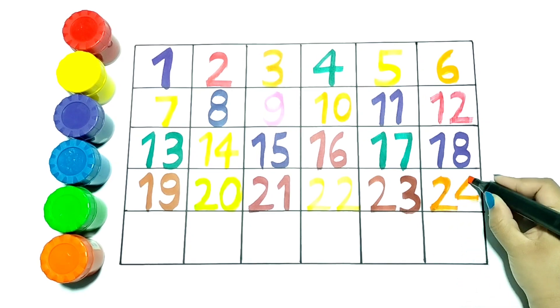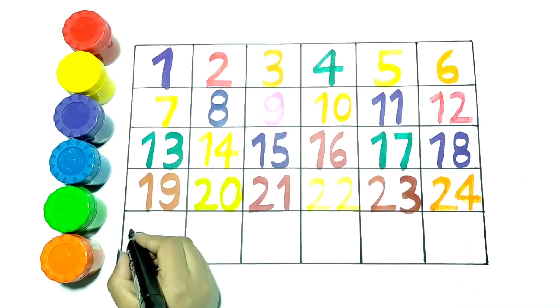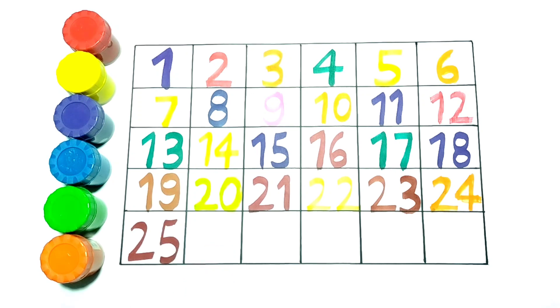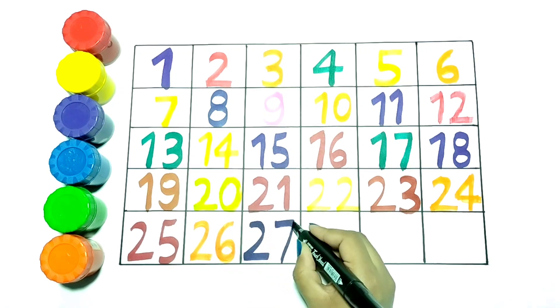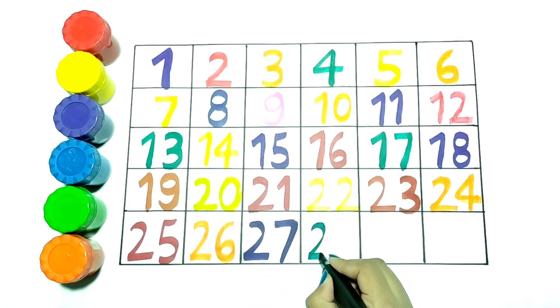24. Now writing 25 with brown color. Let's write 26. 27. This is 27. This is 28.